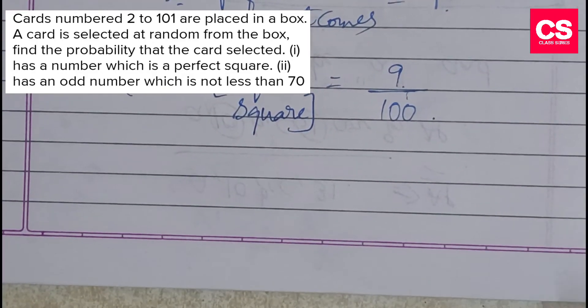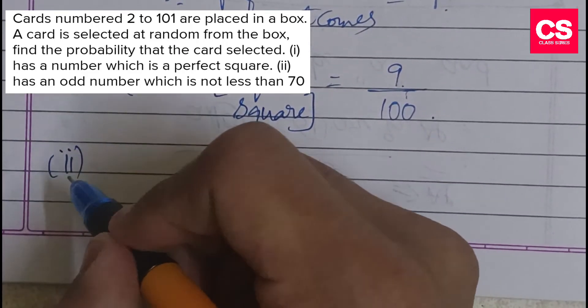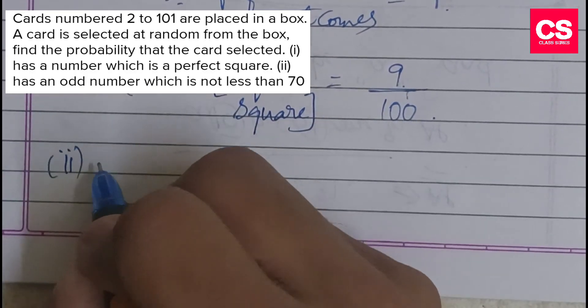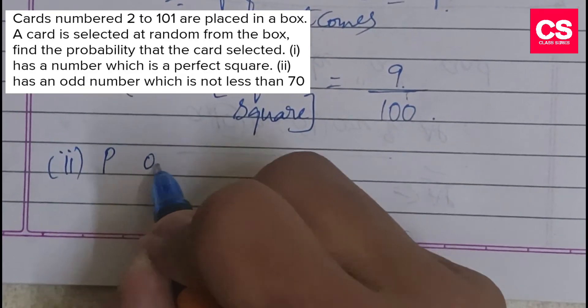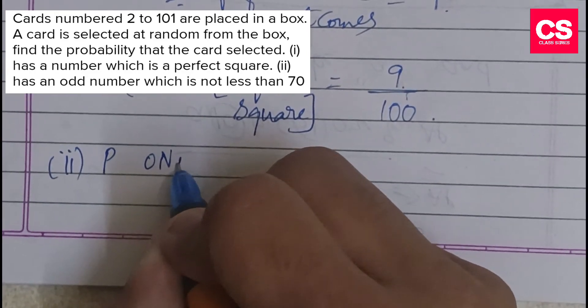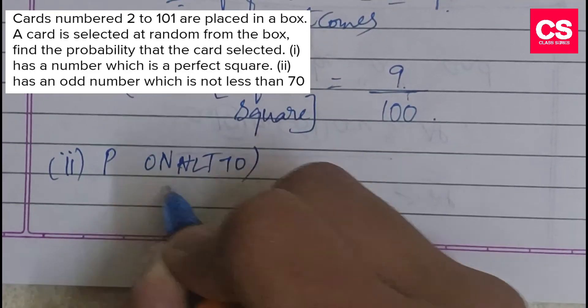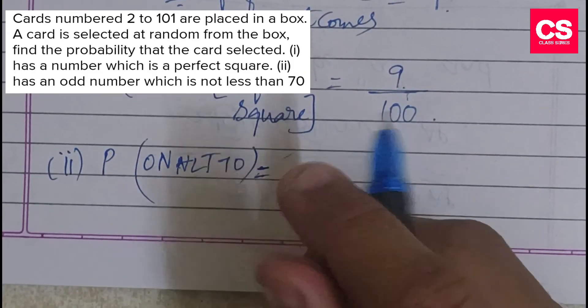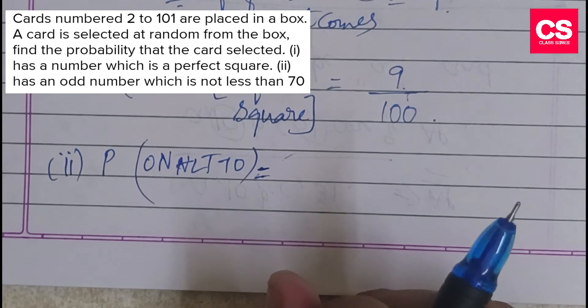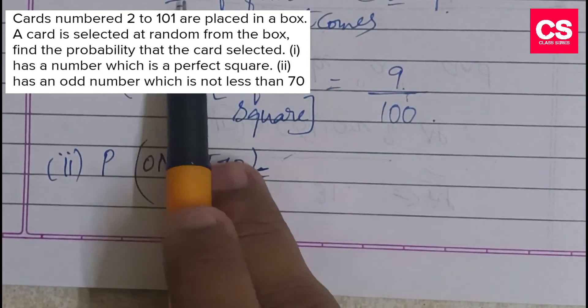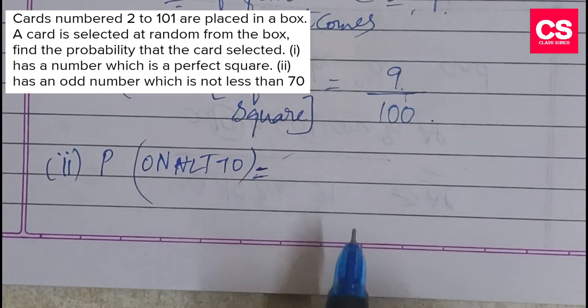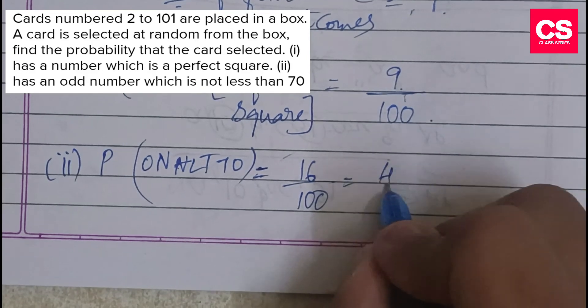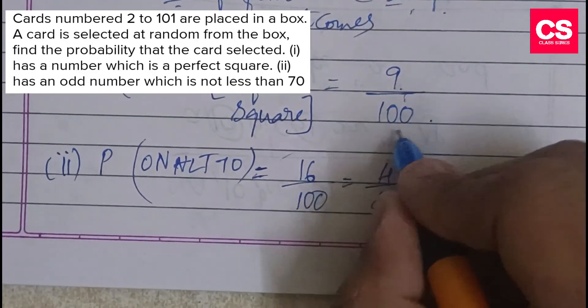Second scenario: find the probability that has an odd number which is not less than 70. Probability of odd number not less than 70. Total between 70 and 101, from 71 to 101, what are the odd numbers? We'll get 16 favorable outcomes. Out of total 100. This simplifies to 4/25. So this is your answer.